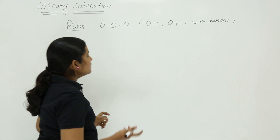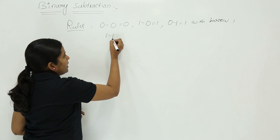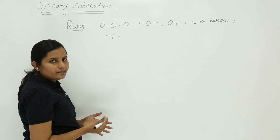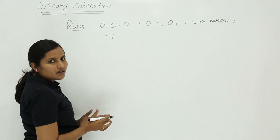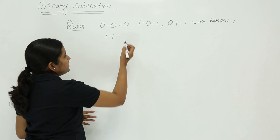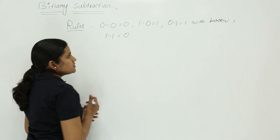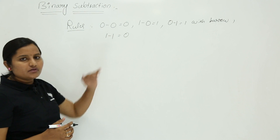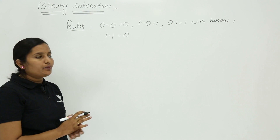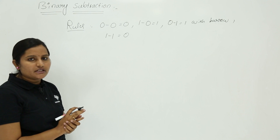The last rule is 1 minus 1. If you are performing a 1 minus 1 operation, then the result is 0. Based on these four rules, you are going to perform subtraction operations.